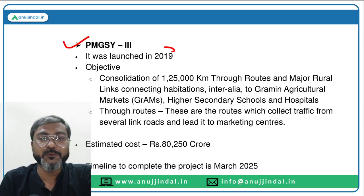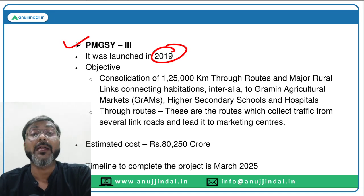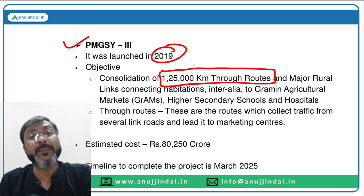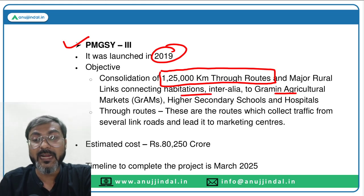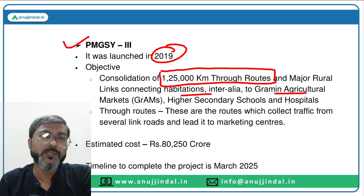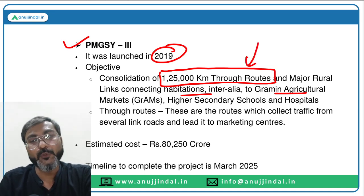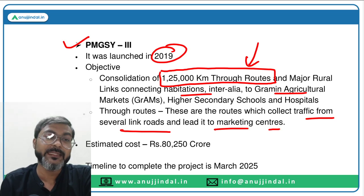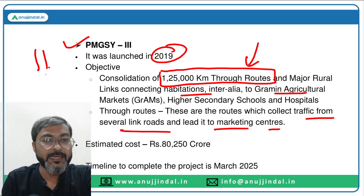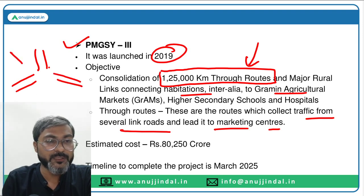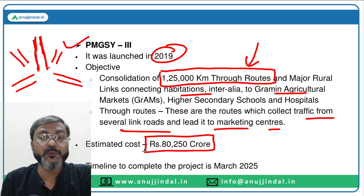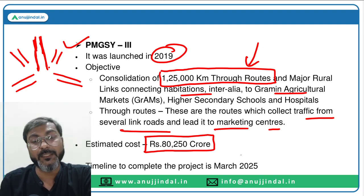Phase 3 of PMGSY was launched in 2019 with an objective of consolidation of 1,25,000 km of through routes and major rural links connecting habitations to Grameen Agricultural Markets, higher secondary schools, hospitals and other facilities. Through routes collect traffic from several link roads and lead it to a marketing center. The total estimated cost is ₹80,250 crores and the timeline for completion is March 2025.